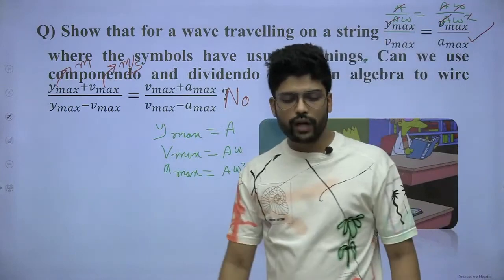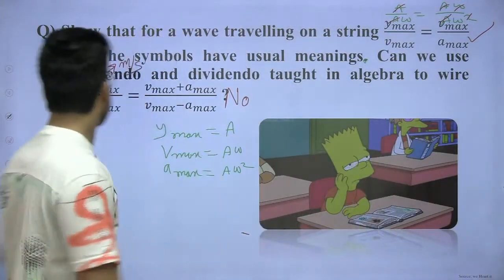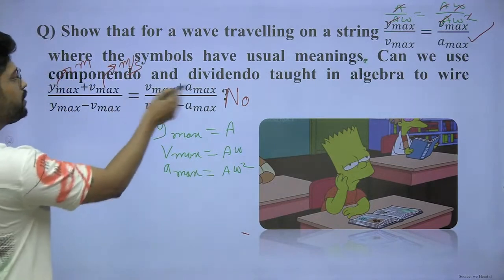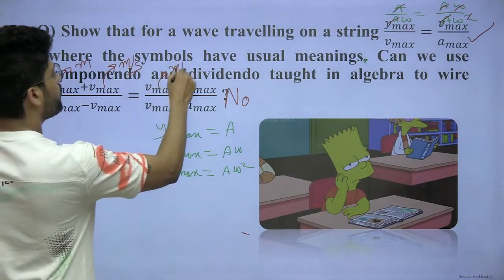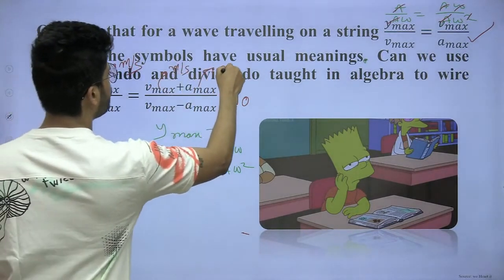What the principle of homogeneity is? You can add or subtract only if the units are the same. This unit is meter per second. This unit is meter per second square. You cannot add them.